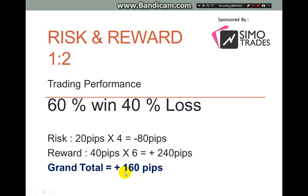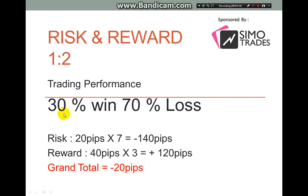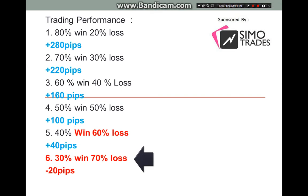Moving to 60/40, we get plus 160 pips. For a 50/50 condition — 50% win and 50% loss — we can still manage about 100 pips. Going further, with only 40% win and 60% loss, we still get 40 pips plus in our pocket. Finally, in a poor condition with only 30% win and 70% loss, we get minus 20 pips.